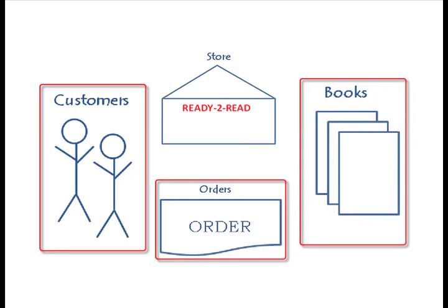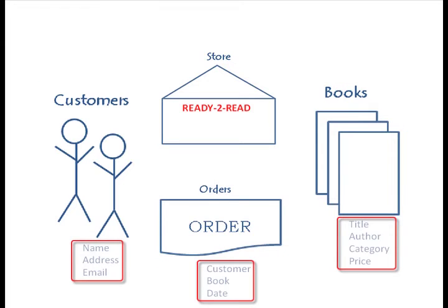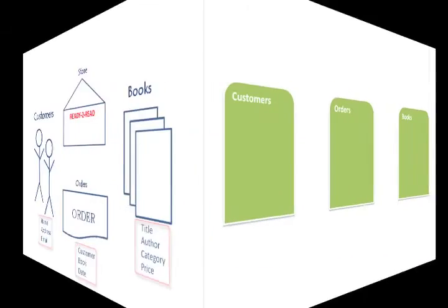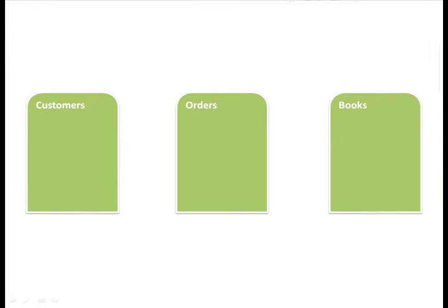Now we know what we want, so let's figure out what all of this has to do with the database. Each of these three things represents a table in the database. A table is one logical unit of information broken up in rows and columns, just like a table you may have seen in Excel or Word. The specific information in each table will be the fields you set up later. The fields are the small chunks of info in each table. So we have our tables. We said the customer table will include name, address, and email.